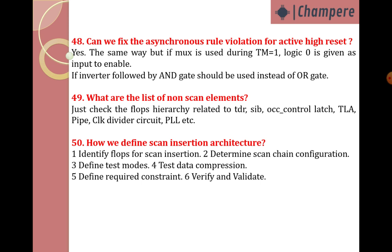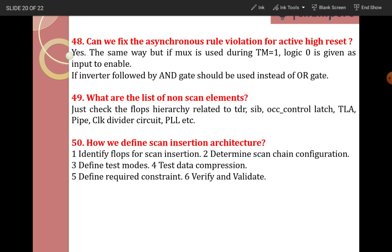Can we fix asynchronous rule violation for active high reset? Yes. For active high reset, we add an AND gate. The same approach applies but when TM equals 1, logic 0 is given as input to the enable. An inverted signal followed by an AND gate should be used instead of an OR gate. Whenever we have active high reset, we need to add an AND gate instead of an OR gate.